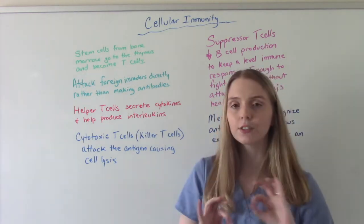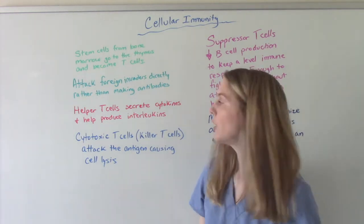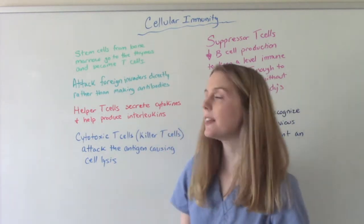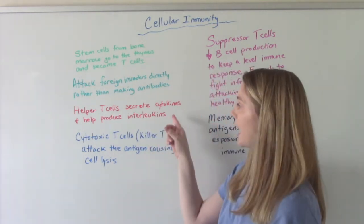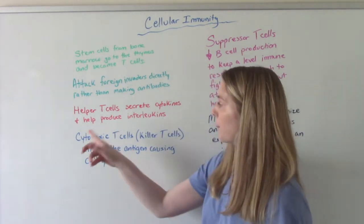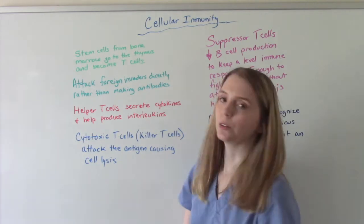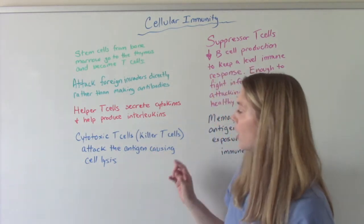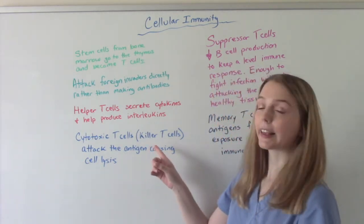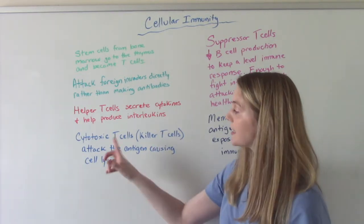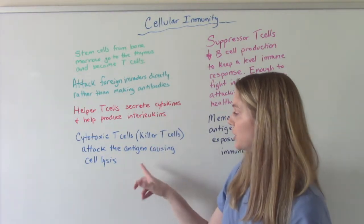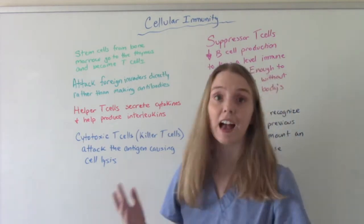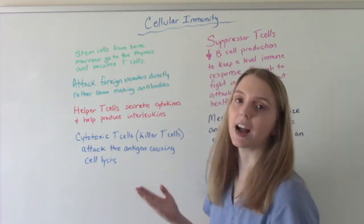There are several different types of T-cells. We have our helper T-cells, whose job is to secrete cytokines and to help produce interleukins. We have our cytotoxic T-cells, also called killer T-cells. They attack the antigen, causing cell lysis — and lysis is death, so causing the cell to die.